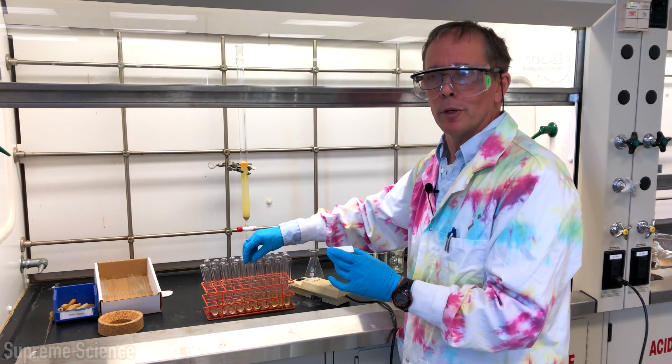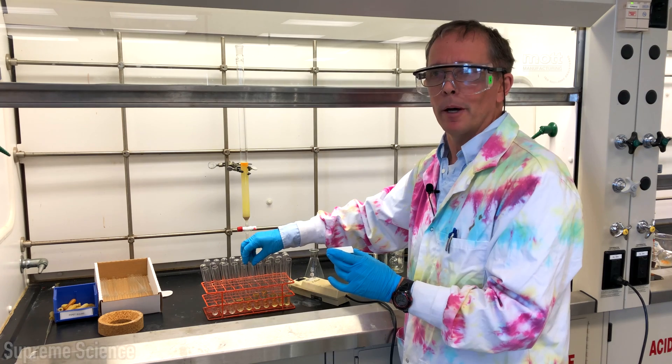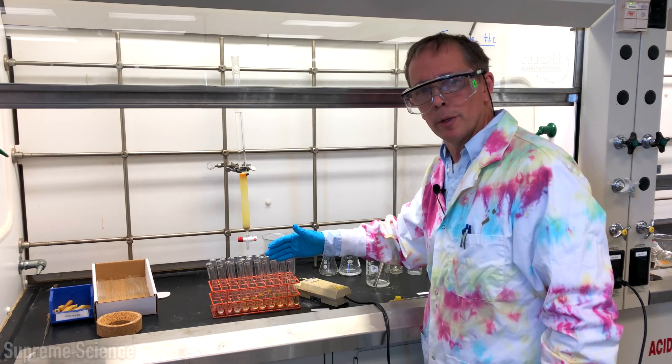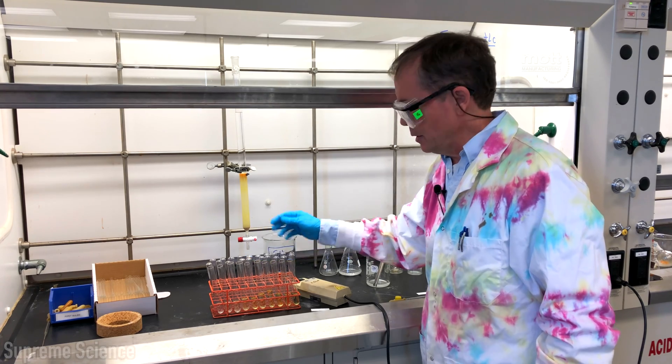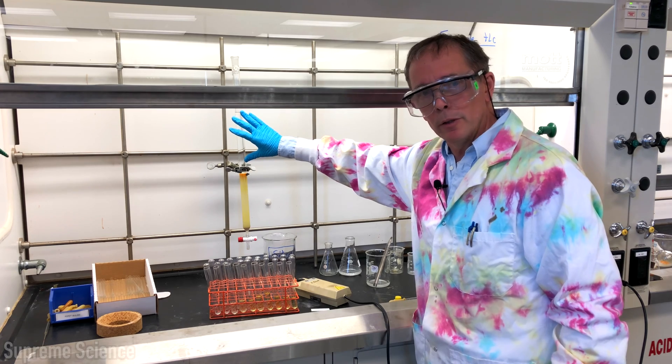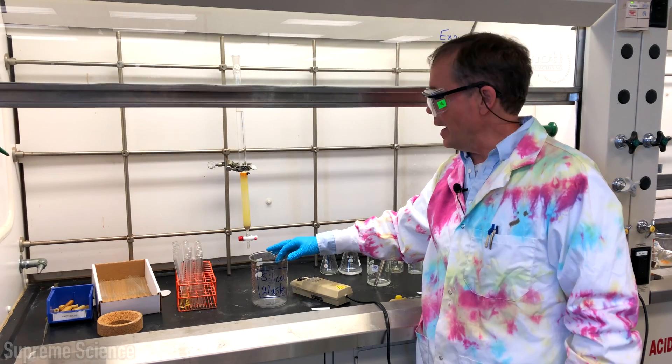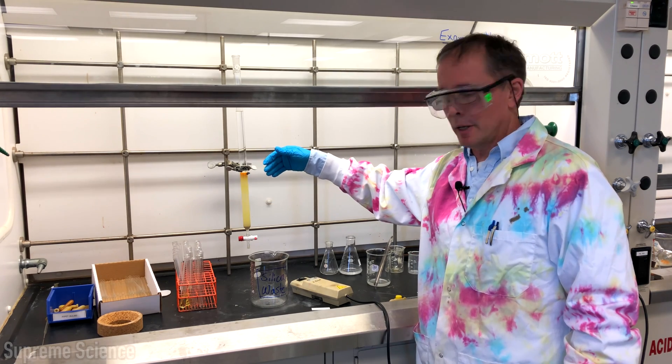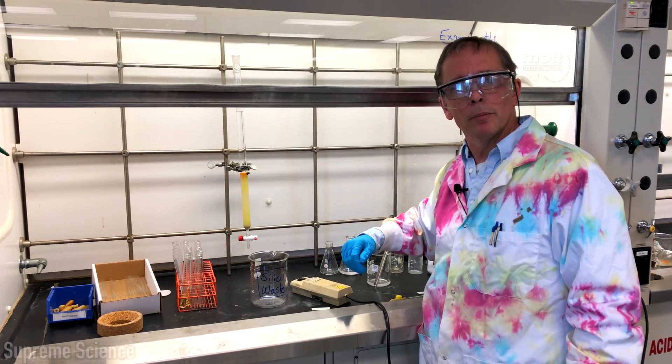Clean up is fairly simple. We'll dispose of the unwanted fractions into the appropriate organic waste solvent bin. We will then tip out the remaining solvent at the top of the column into its appropriate waste. And then we're going to tip the column upside down, open the stopcock, let the silica pour into the waste silica gel beaker.